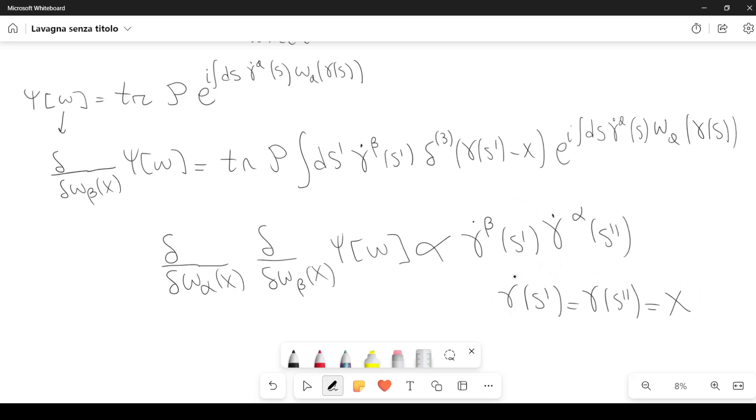In particular, if the loop does not have any intersections, then it means that the velocity vector gamma dot a of s is unique, right? And if this is unique, well,